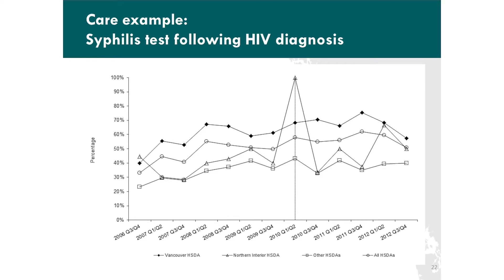One indicator we developed involves looking at the proportion of people who have an HIV test at the same time they have a syphilis test. The data quality here is really good, which is why I feel comfortable with this indicator. We show it's high — about 80% — but there's probably still room for improvement. Another example of new linkages developed is having a syphilis test following an HIV diagnosis, and we can see some variation around the province in that.